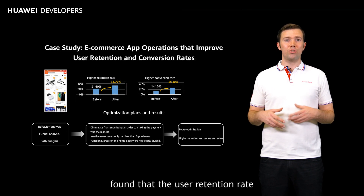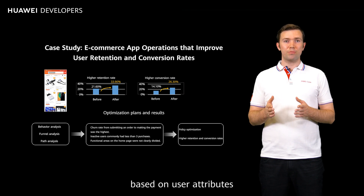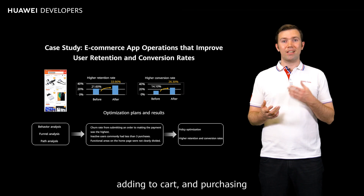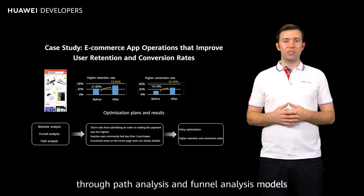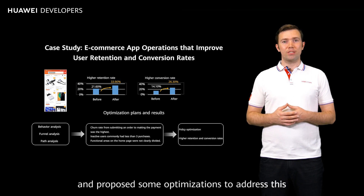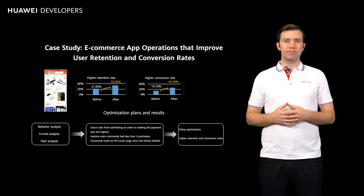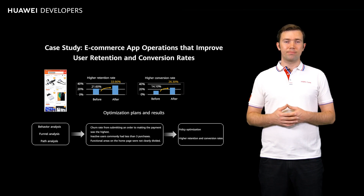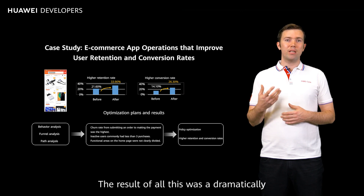The app's operations personnel found that the user retention rate and purchase conversion rate over the previous two months had decreased. They resolved the issue by first segmenting users based on user attributes such as gender, age, region, and phone brand, and user behavior such as browsing products, adding to cart, and purchasing, and then determining different behavior characteristics through path analysis and funnel analysis models. They discovered that the order button was not prominent enough and proposed optimizations: first, they enhanced the interactive design on the order page to highlight the order button; second, they selected users who did not make payments but stayed on the page for a lengthy period due to the button design; lastly, they distributed coupons to those users through push messages. The result was a dramatically improved purchase conversion rate.